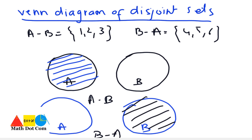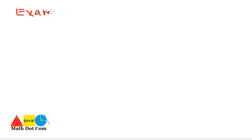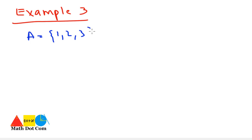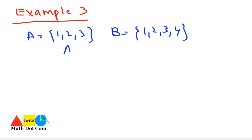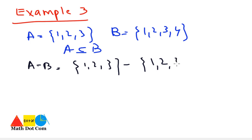Now let's see one more example when one set is a subset of another. Let A = {1, 2, 3} and B = {1, 2, 3, 4}. Here A is a subset of B. A minus B = {1, 2, 3} minus {1, 2, 3, 4}. Since all elements of A are in B, A minus B is an empty set.